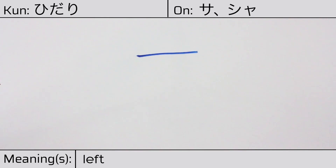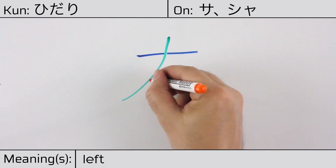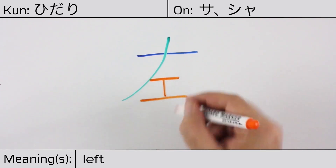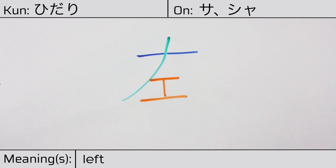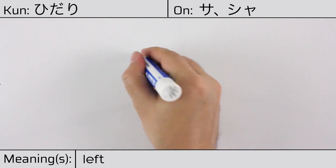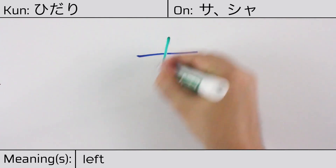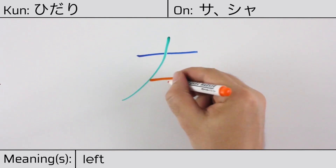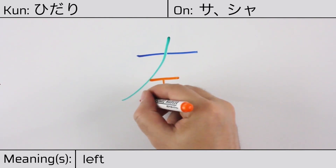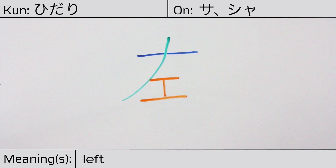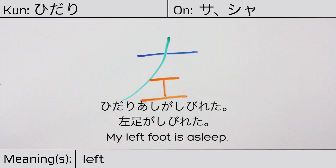The radicals are: ichi or kanji number one, katakana no, and this part meaning work, carpenter, or a skill. You can remember this kanji by the following hint: a hand holding a ruler. Our example sentence is: Hidari ashi ga shibireta — My left foot is asleep.